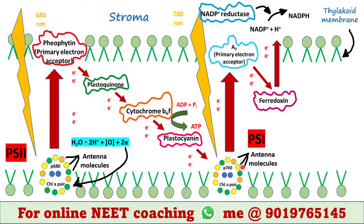This reaction is catalyzed by a specific enzyme, NADP+ reductase. When two electrons are lost by these chlorophyll-a molecules it creates a deficiency, which is fulfilled by two electrons supplied by plastocyanin. This process is known as non-cyclic photophosphorylation because the lost electrons of PS2 are received by PS1 and are not reverted to PS2. The complete movement of electrons is in a unidirectional or non-cyclic manner.